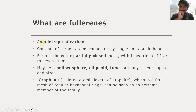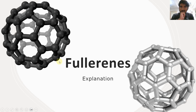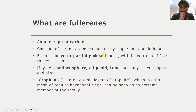What are fullerenes? Fullerenes are allotropes of carbon and they consist of carbon atoms connected by single and double bonds. They form closed or partially closed mesh with fused rings of five to seven atoms. As you can see on the screen, this is a fullerene — specifically a buckminsterfullerene.